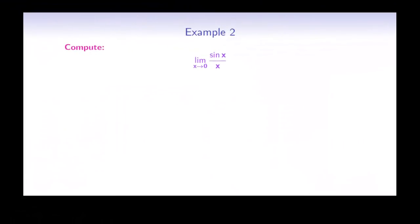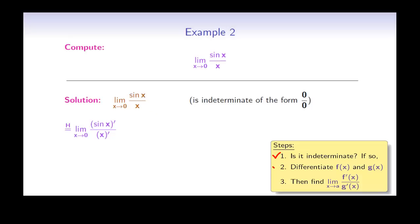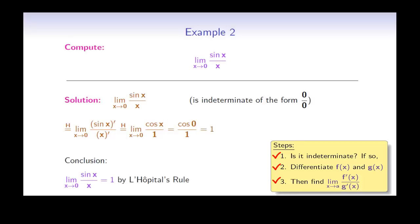In the next example, we have the limit as x goes to 0 of sin x over x. We check for an indeterminate form: the limit of sin x as x goes to 0 is 0, and the limit of the denominator as x goes to 0 is also 0. Therefore, we do have an indeterminate form of the type 0 over 0. Using L'Hôpital's rule, we differentiate the numerator and denominator independently. The derivative of sin x is cos x, and the derivative of x is 1. Inserting x equals 0, the answer is 1. Therefore, the original limit is also equal to 1.